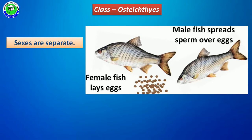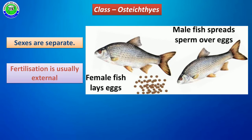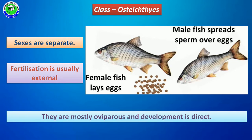During sexual reproduction, most Osteichthyes members have separate male and female individuals. At the time of sexual reproduction, male and female individuals release their gametes outside their body. Fertilization takes place outside the body — this is called external fertilization. After external fertilization, the zygote develops into eggs; these are oviparous animals. These eggs develop directly into young ones without a larval stage, called direct development. So fertilization is external and all Osteichthyes members are oviparous, with direct development.